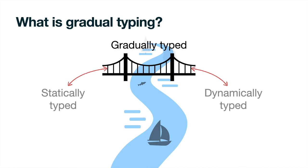Gradually typed languages have risen to bridge between these two as a third category, where the programmer can control whether required checks are static or delegated to runtime. These runtime checks come at a cost, but are needed to guarantee that all static invariants the type system relies upon hold in practice. Gradual languages that provide these guarantees are considered sound, and we will only focus on sound gradual languages for our purposes.